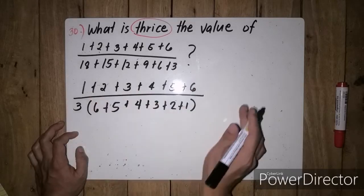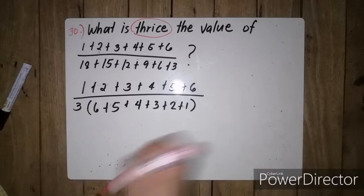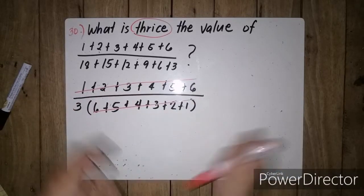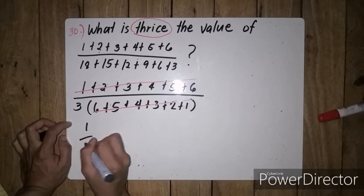So, we don't need to add all the numbers. So, all we have to do is to cancel that out. So, kakancel na natin yan. Cancel na natin yan. So, ang matitira na lang ay 1 third.